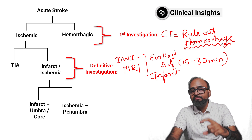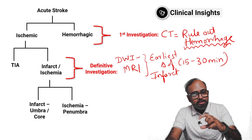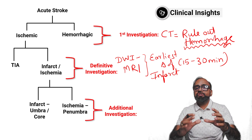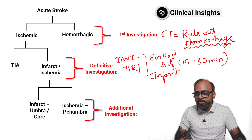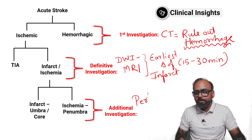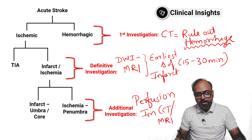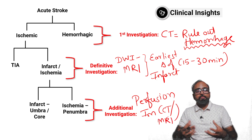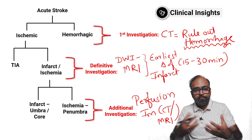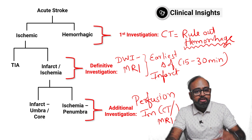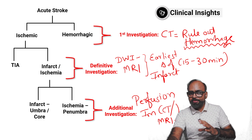So this is the potentially salvageable parenchyma that you can potentially save. Here we need a specialized investigation — this is called perfusion imaging. Perfusion imaging can be either CT perfusion or MRI perfusion, where perfusion means capillary level blood flow. So we can measure the actual blood flow at the level of the parenchyma. This is what you need to know about stroke imaging.